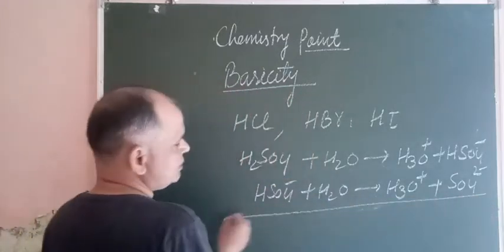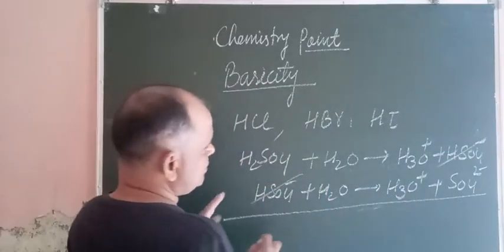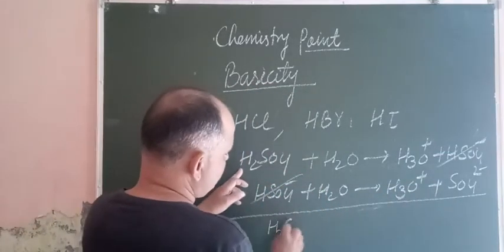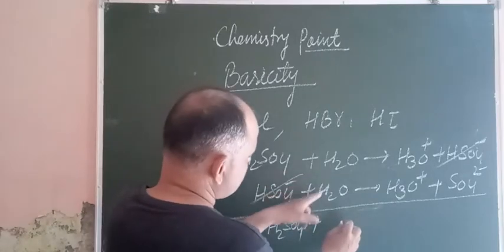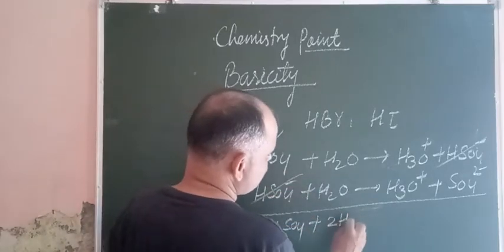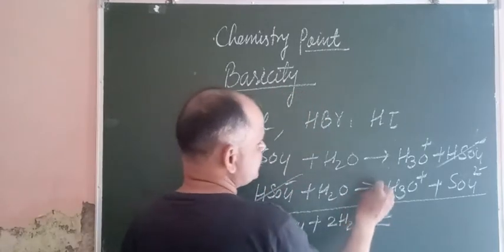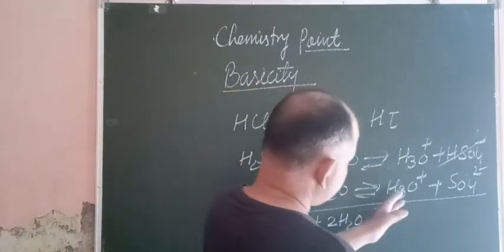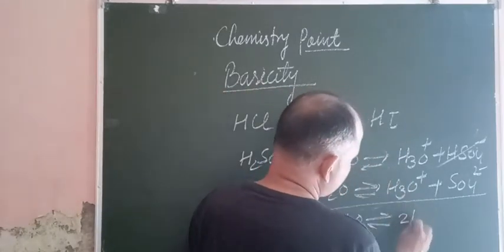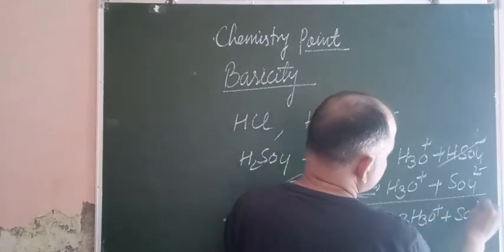HSO4- plus H2O gives H3O+ plus SO4 2-. Now we combine this reaction: H2SO4 plus 2H2O gives 2H3O+ plus SO4 2-. This is a reversible reaction.